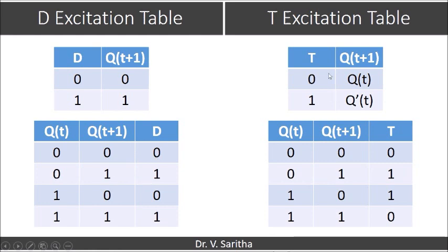Now coming to the T flip-flop excitation table — this is the function table for T flip-flop. T is 0 means both are equal: Q(t+1) equal to Q(t). T equal to 1 means Q(t+1) is complement of Q(t). So when getting the excitation table, when both Q(t) and Q(t+1) are equal — either 0 or 1 — T will be 0. T is 1 when both are complement to each other: Q(t)=0 and Q(t+1)=1, or Q(t)=1 and Q(t+1)=0. In this way we get the excitation tables for D flip-flop and T flip-flop.